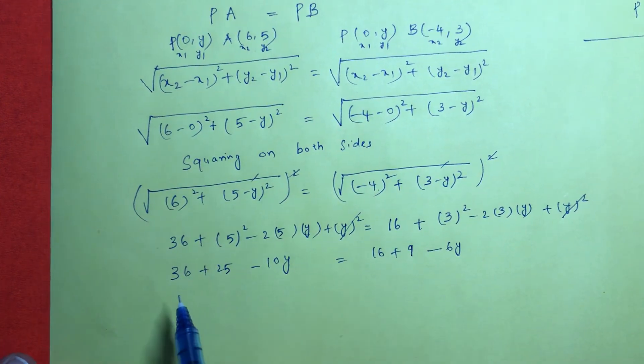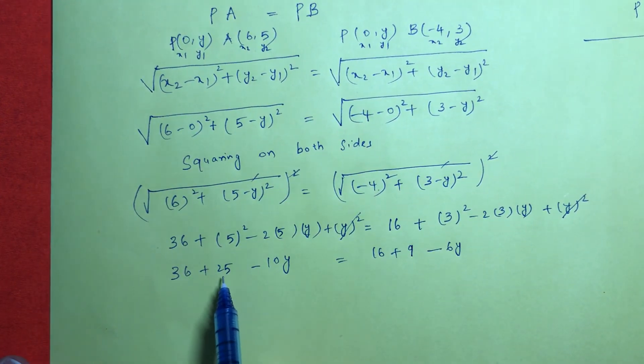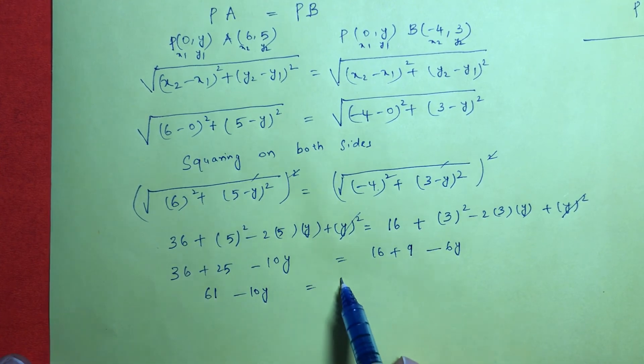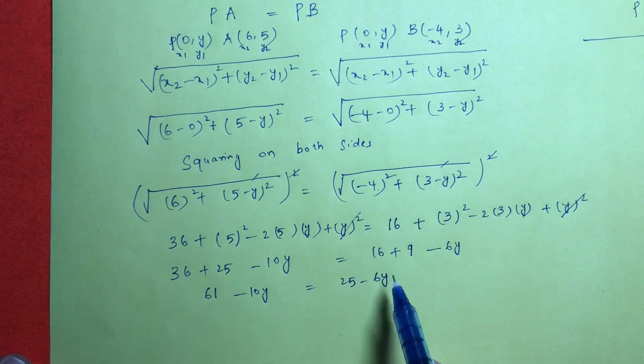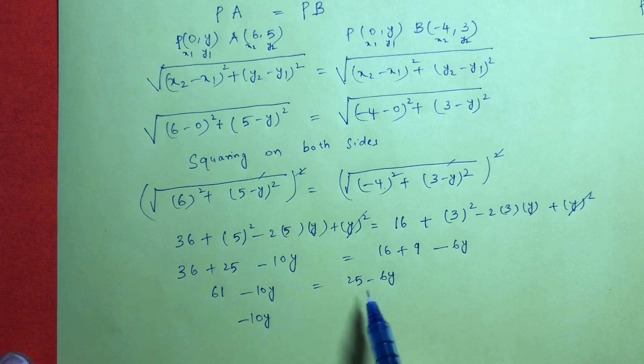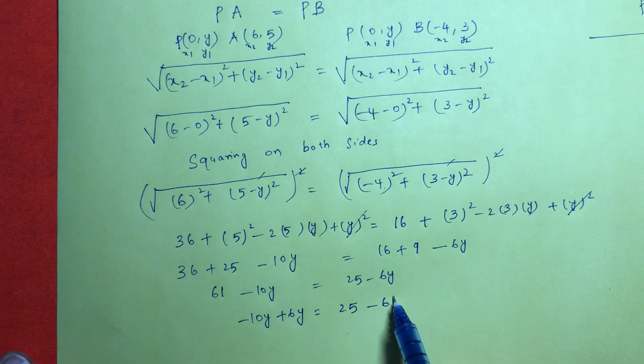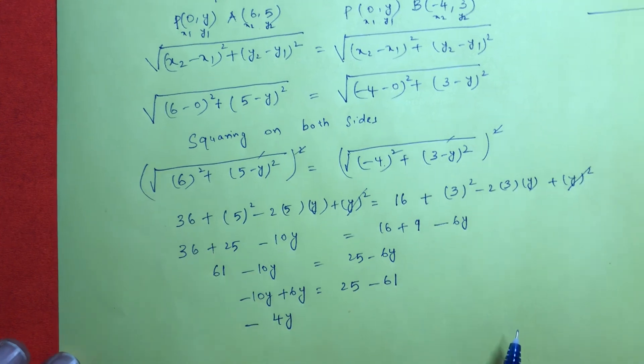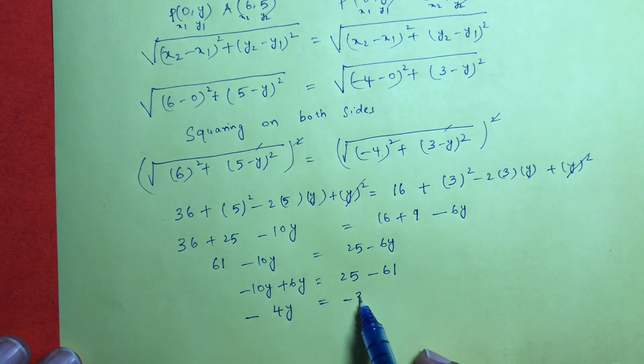36 + 25 is 61 - 10y = 25 - 6y. So -10y + 6y = 25 - 61. So -4y equals -36.